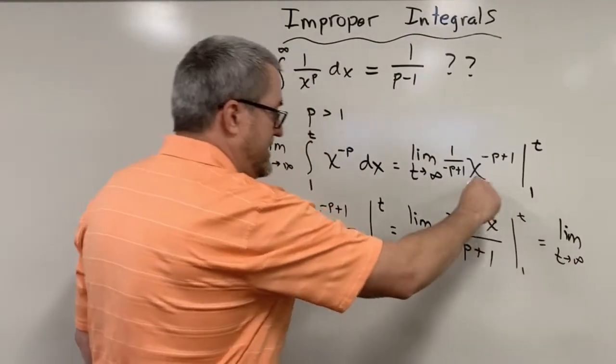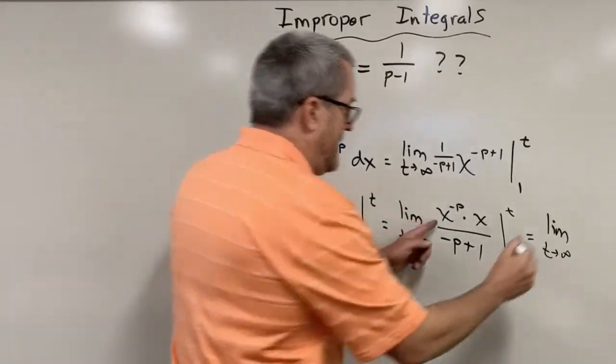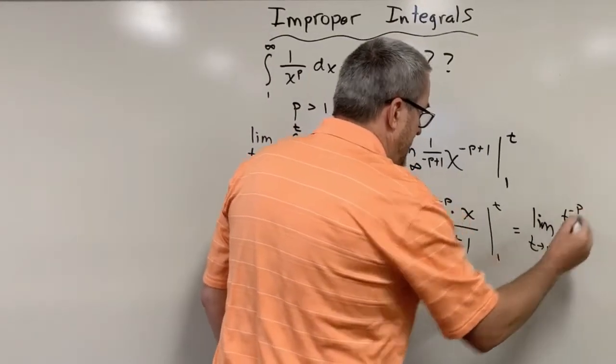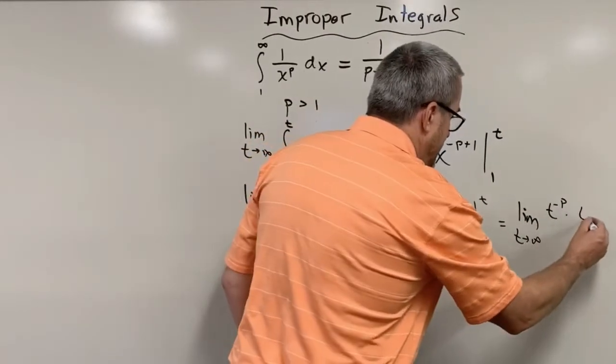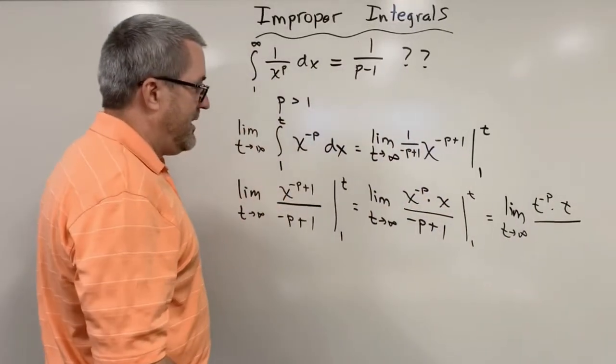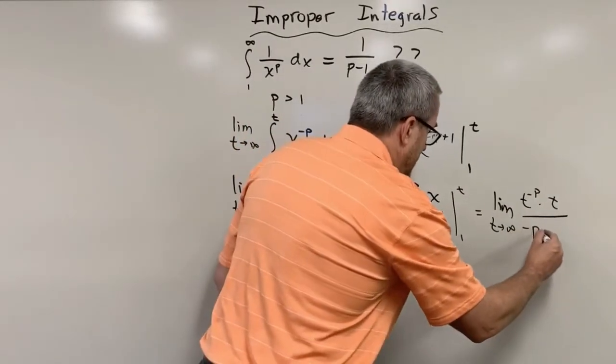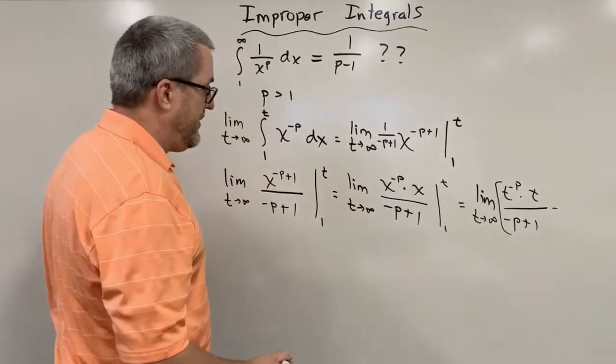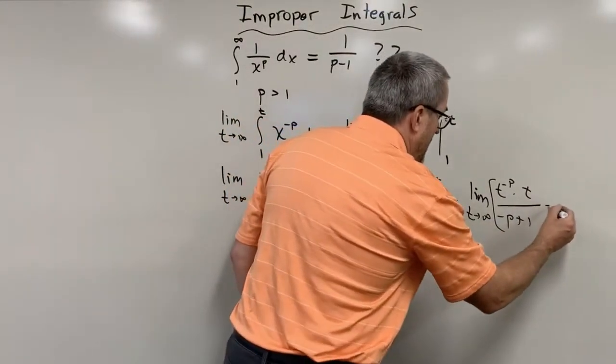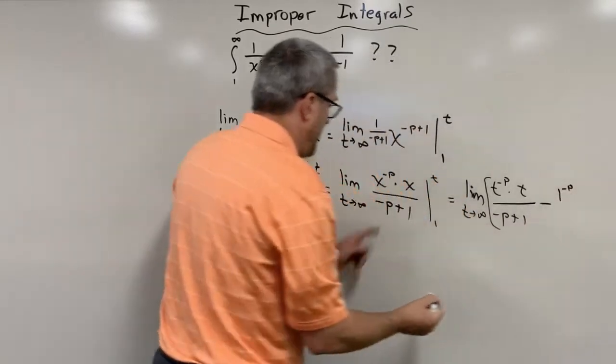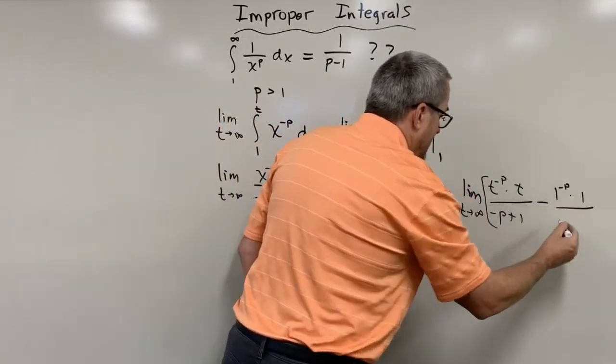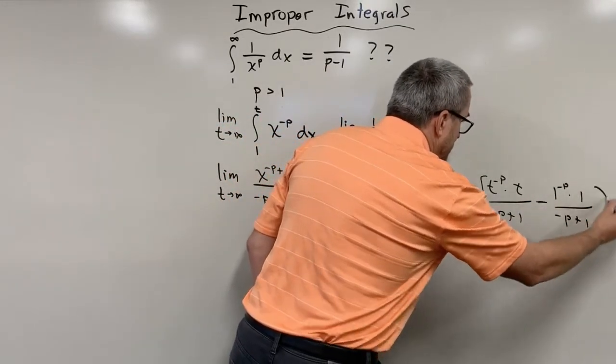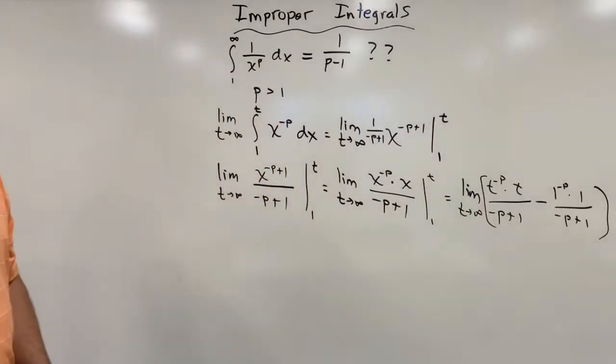Fundamental theorem of calculus. We're first going to substitute a t for x. So we'll have t to the negative p times t over negative p plus one minus, plug a one in for x. We'll have a one to the negative p times one all over negative p plus one.